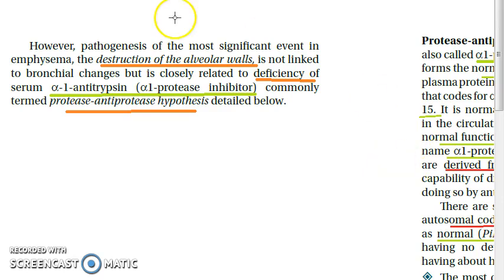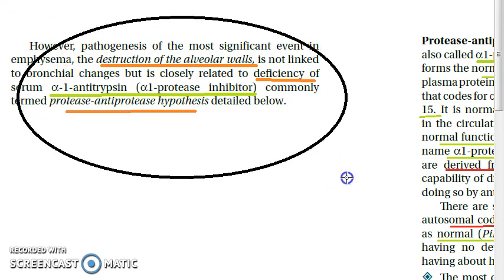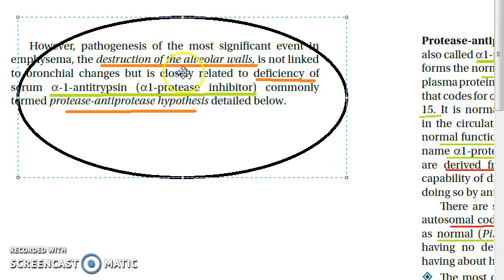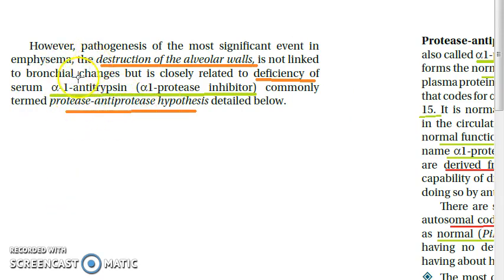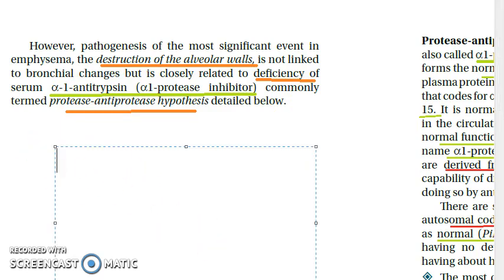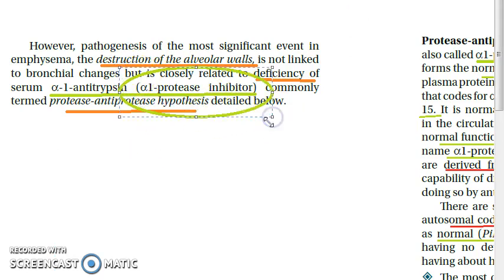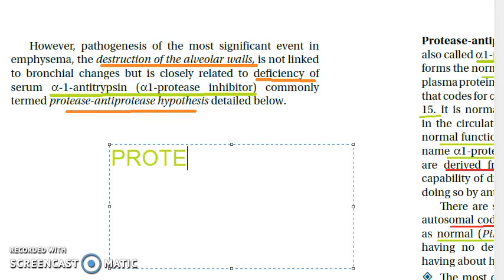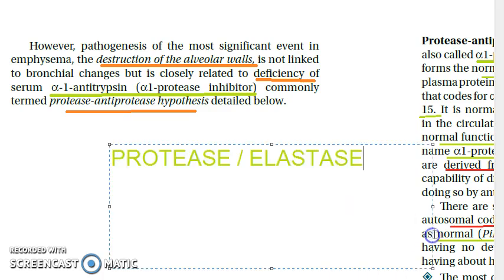In brief, the pathogenesis involves destruction of the alveolar walls due to deficiency of alpha-1 antitrypsin. Alpha-1 antitrypsin is a protective substance — when it is deficient, alveolar walls are destroyed. This is explained by the protease anti-protease hypothesis. Alpha-1 antitrypsin is also called alpha-1 protease inhibitor, meaning it normally inhibits proteases. When it is deficient, proteases increase — mainly elastase.